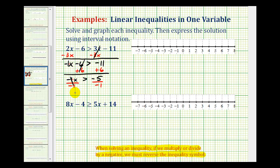So here we'll have positive 1x or x, and if this is greater than, and then we reverse it, we'll have x is less than, and then negative 5 divided by negative 1 is positive 5. So our solution is x is less than positive 5.